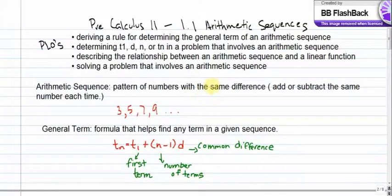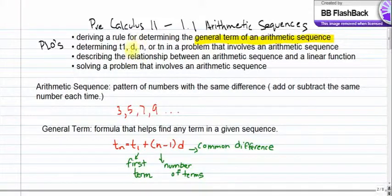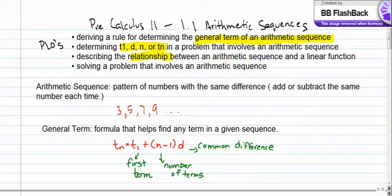Hi guys, welcome to Pre-Calc 11, Chapter 1.1 Arithmetic Sequences. As usual, we'll start off with our PLOs for this section. The first PLO is to derive a rule for determining the general term of an arithmetic sequence. The second is to determine T1, D, N, and T of N in a problem that involves an arithmetic sequence. The third is to distinguish a relationship between an arithmetic sequence and a linear function. And the last is to solve word problems that involve arithmetic sequences.